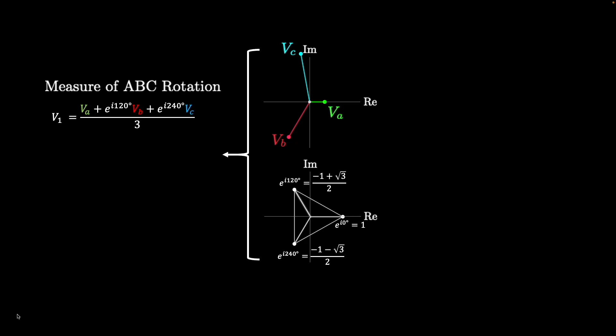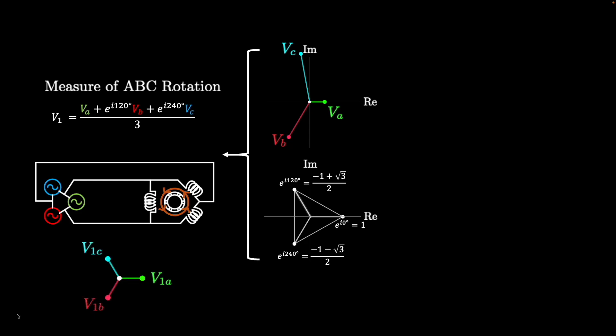To link this back to reality, the V1 value measures the amount that a motor would rotate in a specific direction, which in this example is counterclockwise. V1 is used to create a set of three phasors V1A, V1B, and V1C that have the same magnitude and are 120 degrees apart from each other.